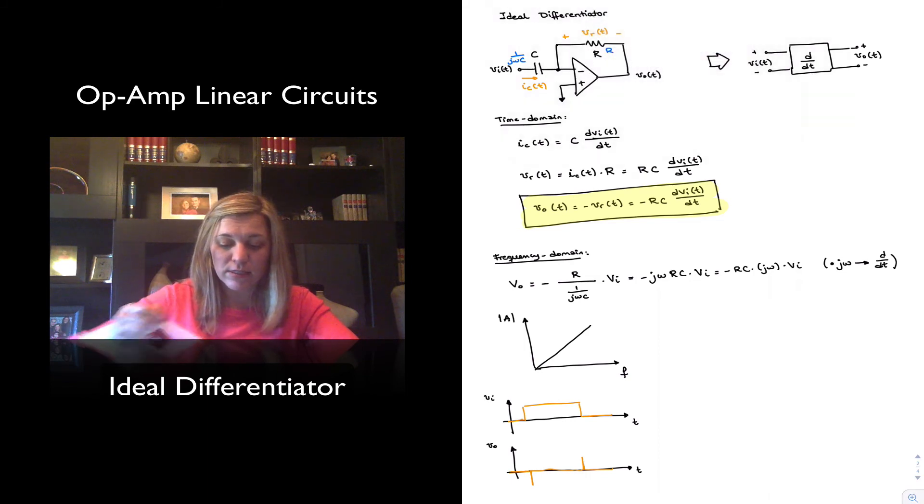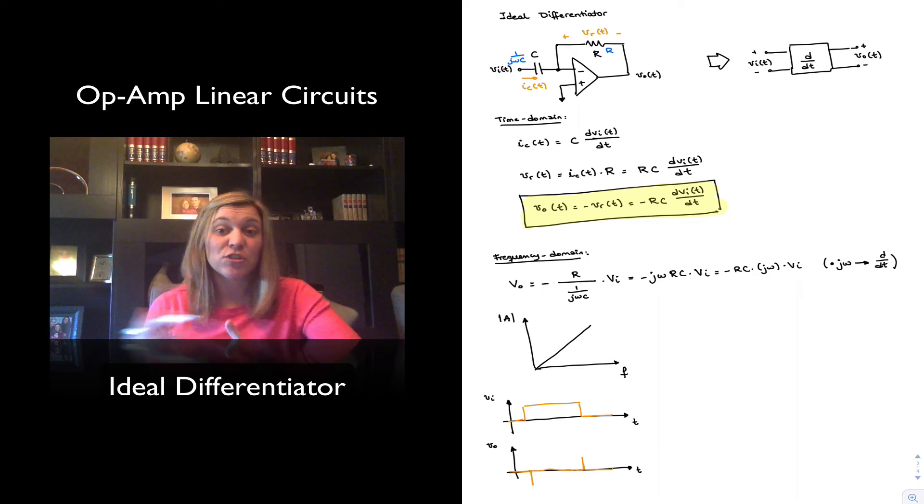Just as the ideal integrator had its limitations, the ideal differentiator also has some limitations, the main one being that notice that as ω increases, the magnitude of the transfer function, which is essentially the gain of the circuit, keeps increasing in an unbound manner. It goes to infinity.